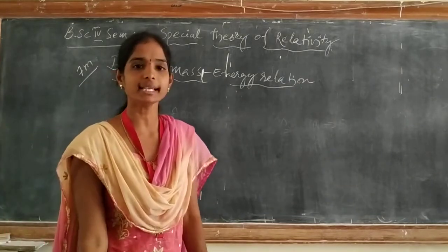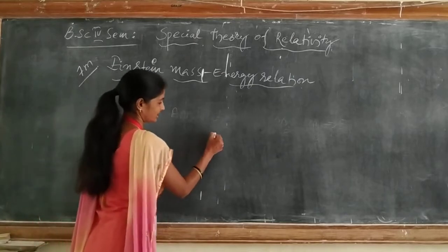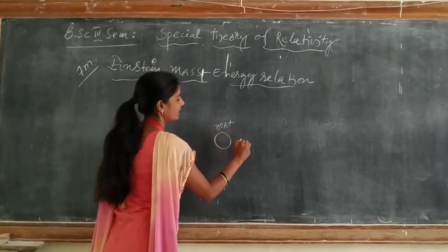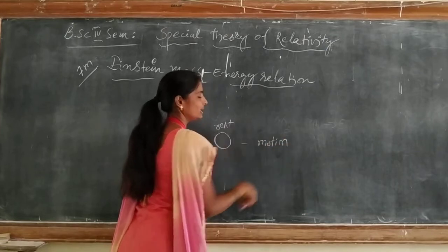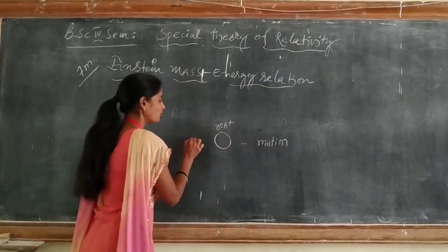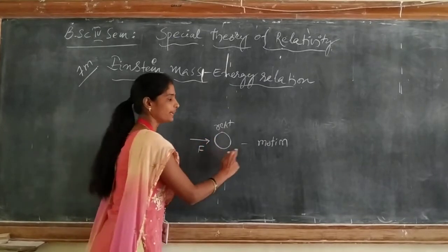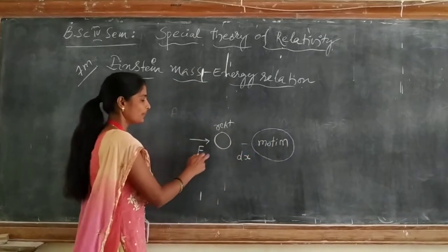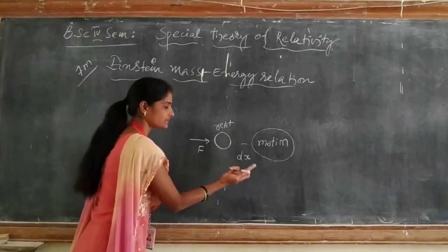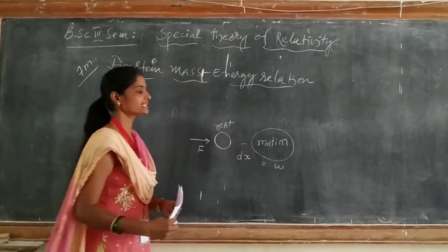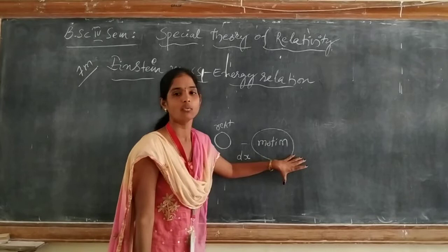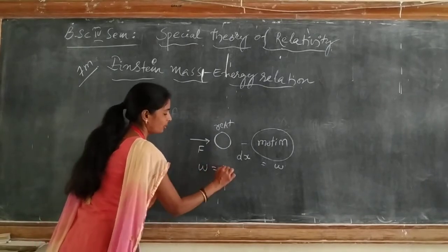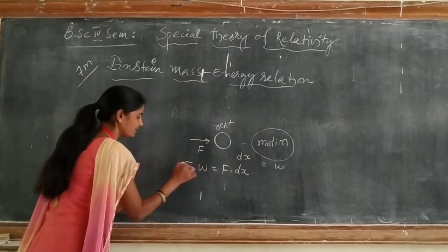As we know, the kinetic energy of a body is nothing but the amount of work done to accelerate the body from its state of rest. When the body is moving from one place to another place, we have to apply a force, and then only the body moves. Therefore, work is written as W = F·dx, which is nothing but kinetic energy.